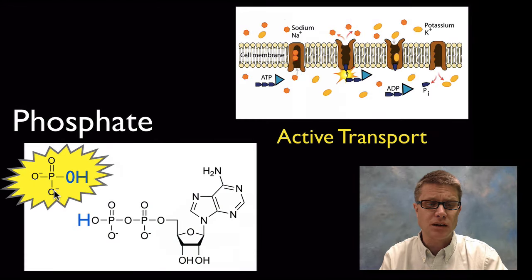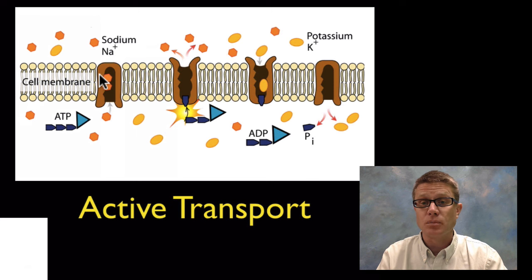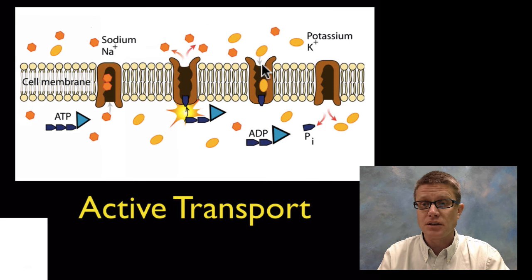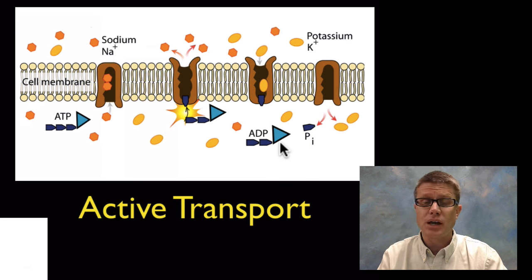Once we release that phosphate, what is it used for? One major use is active transport. The sodium-potassium pump, found on most cells but especially important in neurons, uses ATP. The phosphate binds to the pump and provides the energy to pump three sodium ions out; then two potassium ions bind and flow inside as the phosphate is released. About 20% of your body's energy right now goes to running the sodium-potassium pump and keeping neurons working.